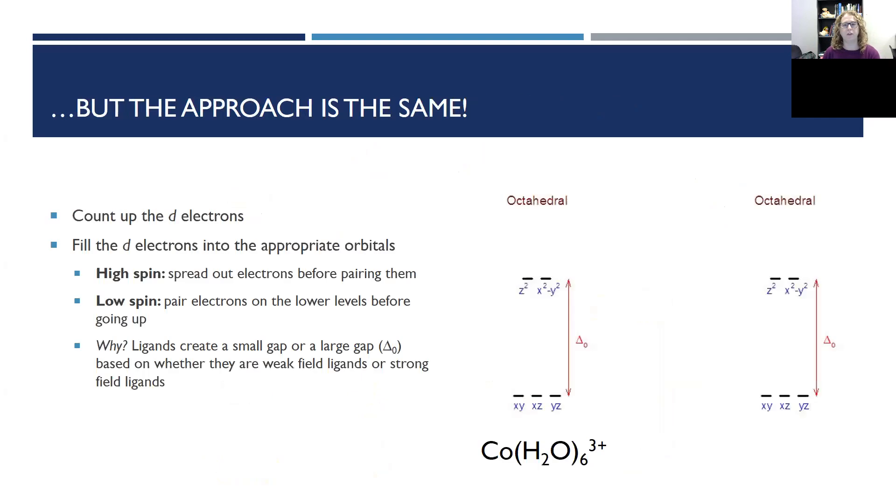Regardless, though, the approach is always the same. So here's what we're going to do. We're going to count the d electrons. Hey, we did that before in an earlier video, didn't we? And then we're going to put them in the right orbitals, just like we did in electron configurations. Remember, we had lines and we'd put two or we'd go one, one, one, and fill. We're going to do that again with our d orbitals. We just have some slightly different rules.